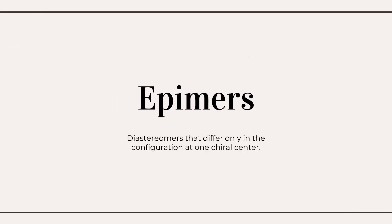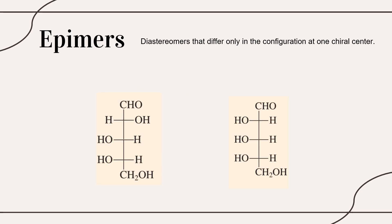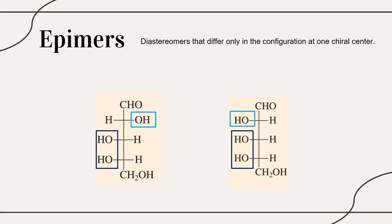Another type of stereoisomer is an epimer. Epimers are diastereomers that differ only in the configuration at one chiral center. Looking at these two molecules, they are diastereomers since they are not mirror images and are non-superimposable, but they are specifically called epimers. The positioning of two OH groups is on the same side, but at one particular chiral center the position of the OH group differs. Therefore, this is an example of a pair of epimers.